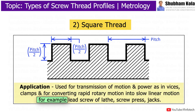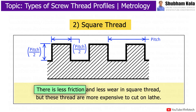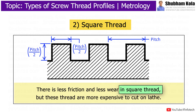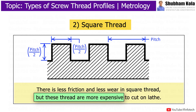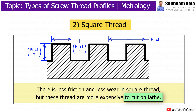For example, the lead screw of a lathe, screw press, and jacks. There is less friction and less wear in square thread. However, these threads are more expensive to cut on a lathe.